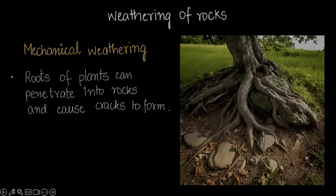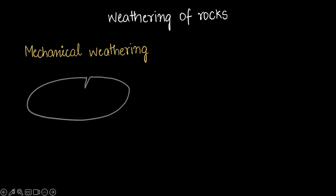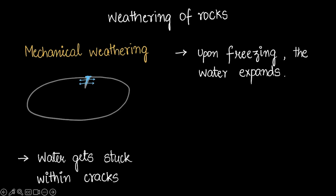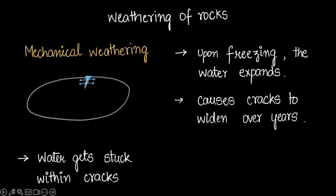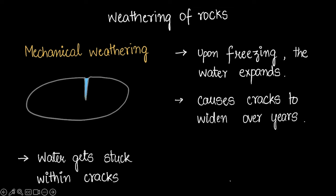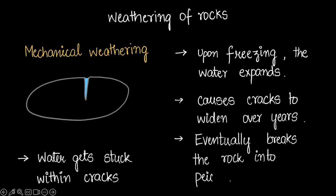Another example of mechanical weathering: if a rock has a small crack and water gets into it, the water would expand when it freezes. That would cause the crack to widen, and over years when this process repeats itself, the crack would get wider and essentially break the rock into smaller pieces.